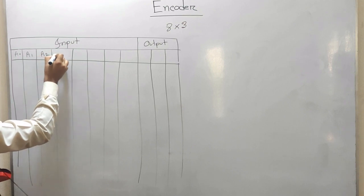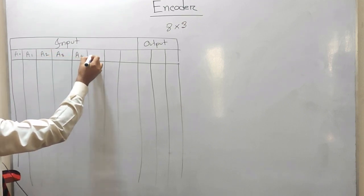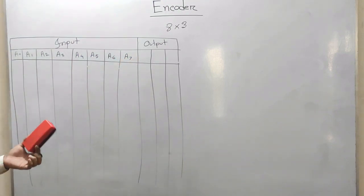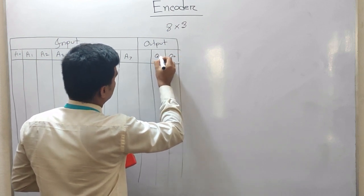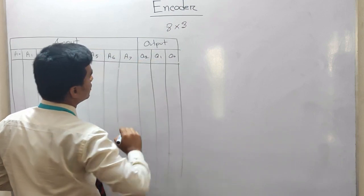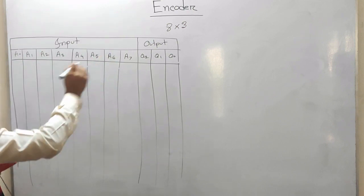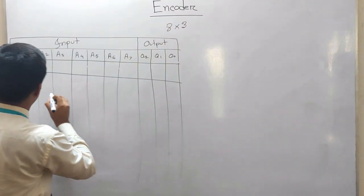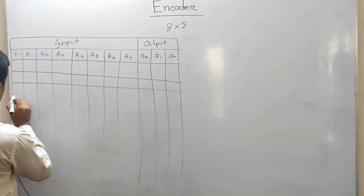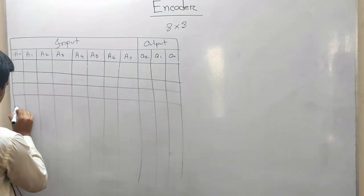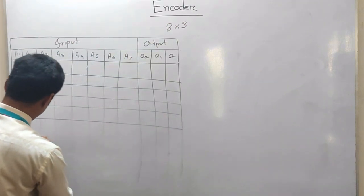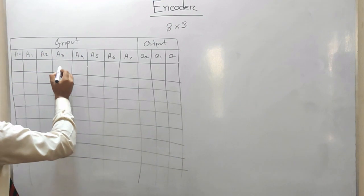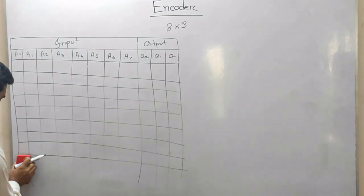The input lines are labeled A1, A2, A3, A4, A5, A6, A7. These correspond to the inputs of the encoder. Counting 1, 2, 3, 4, 5, 6, 7, 8 — this is what you have done for the input structure.